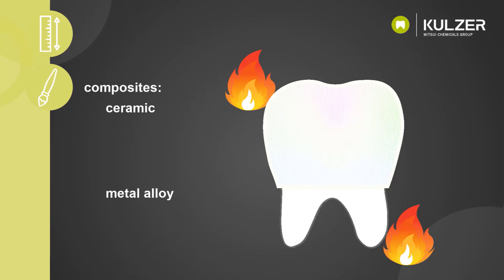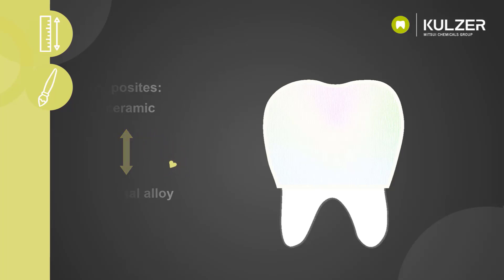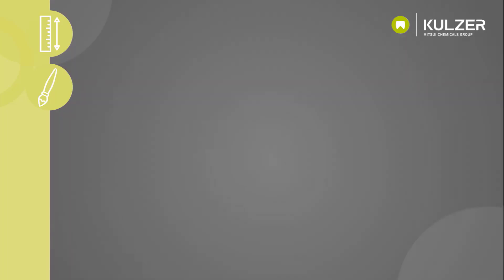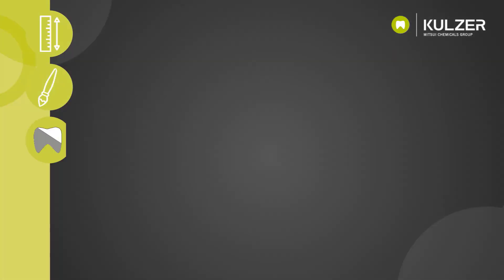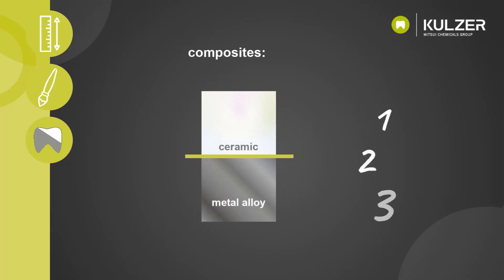The ceramic and the metal alloy should harmonize with each other. Accordingly, it is important to consider the CTE in order to choose the right ceramic for the right alloy. If we take a closer look at the bonding zone of the ceramic and the metal alloy, three different scenarios can arise.